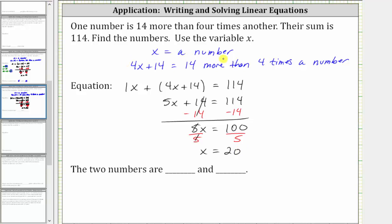So now we know x is equal to 20, which is one of the numbers. The other number is four x plus 14, which means we need to substitute 20 for x into the expression, which gives us four times 20 plus 14. Four times 20 is 80, and 80 plus 14 is equal to 94.